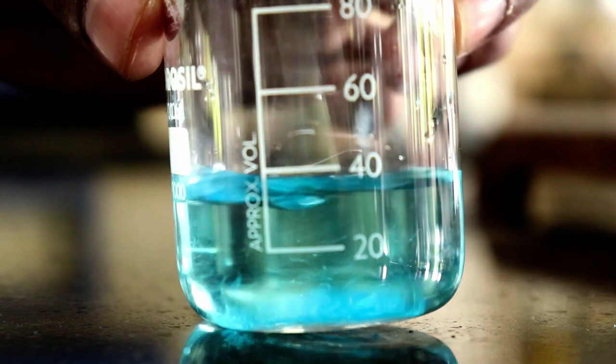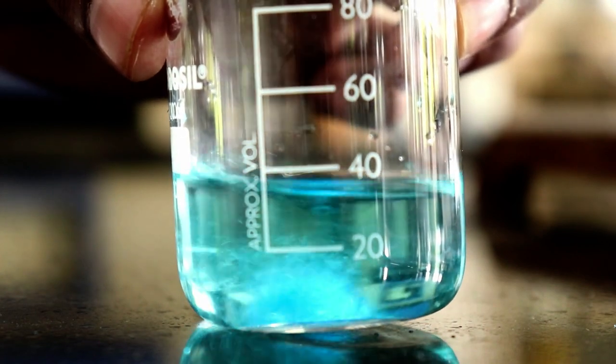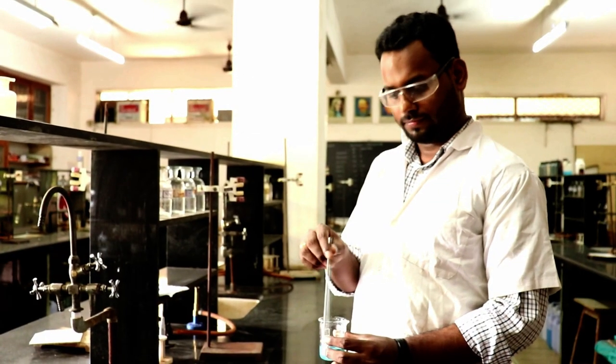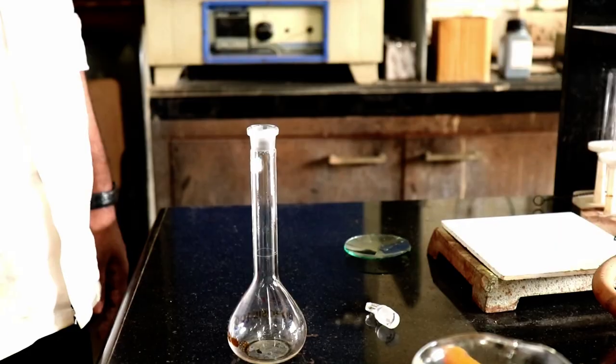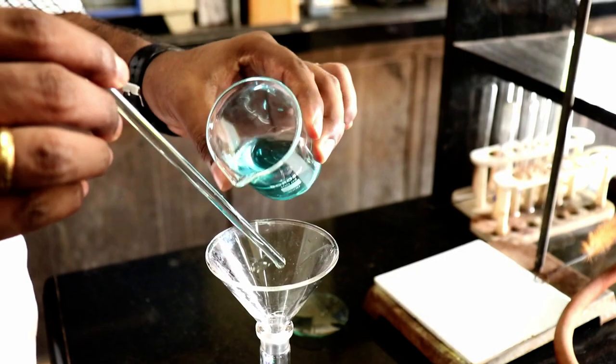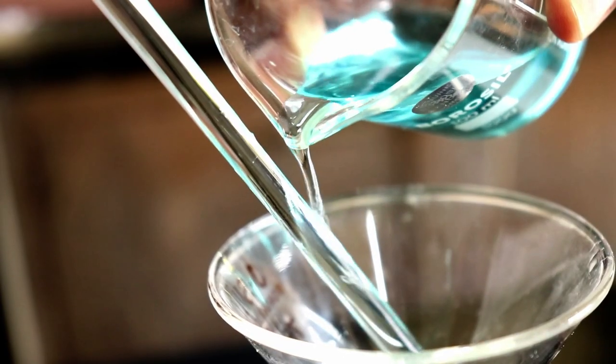Stir it gently with the help of a glass rod. Please don't bang the glass rod on the walls of the beaker. Now place a funnel on the standard measuring flask. Transfer the solution to the standard measuring flask like this.